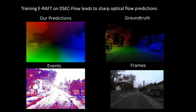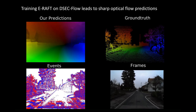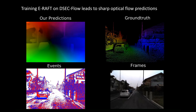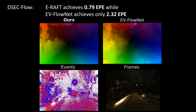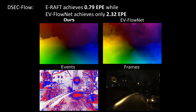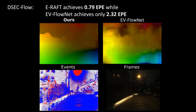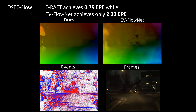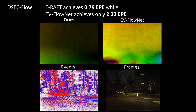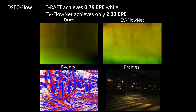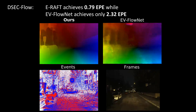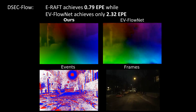Training ERAFT on DSEC Flow leads to sharp optical flow predictions. ERAFT drastically outperforms EVFlowNet with an endpoint error that is almost three times lower on DSEC Flow. Our method also performs well at night, where noisy event data and flashing streetlights are especially challenging.